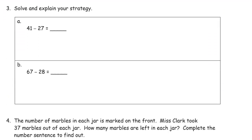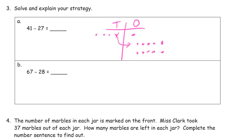Now we can solve and explain your strategy. Here's my explanation: if I'm going to subtract 27, I can't cross out 7 ones here, so I have to unbundle a 10. I cross out 7 of the ones, then subtract 2 tens. I have 1 ten and 4 ones left — 14. That's the explanation of my strategy. 'Explain your strategy' means you can't just write down a number; you have to show how you did it.